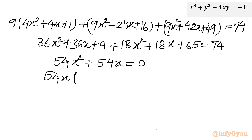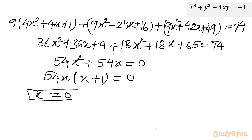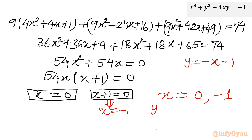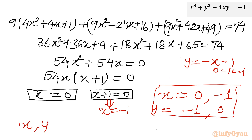Taking 54x common: 54x(x plus 1) equals 0. So x equals 0 or x equals minus 1. Remember y equals minus x minus 1. When x equals 0, y equals minus 1. When x equals minus 1, y equals 0. So the ordered pairs (x, y) are (0, minus 1) and (minus 1, 0).